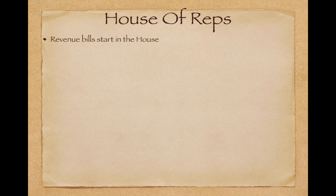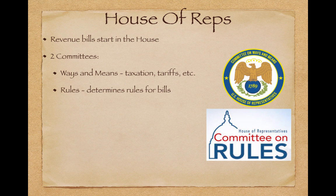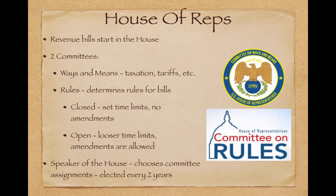Revenue bills start in the House — dealing with money must start in the House. Two committees you should be familiar with: the Ways and Means Committee, which deals with taxation, tariffs, etc., and the Rules Committee, which determines rules for bills — for example, will it be a closed bill with set time limits for debate and no amendments, or an open bill with looser time limits where amendments are allowed. The Speaker of the House helps choose committee assignments and is elected every two years by the party in control.